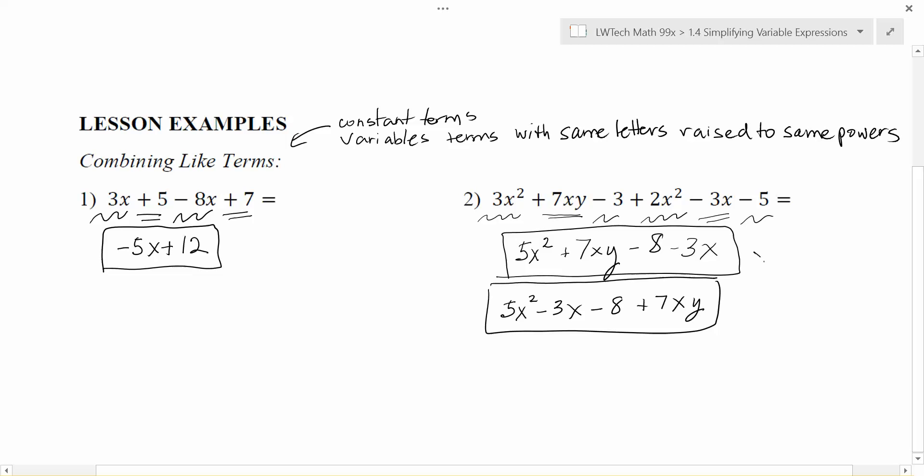But the signs in front of each of the answers does. So these are two equivalent answers. Either one would be fine. But notice the 8 does have to be subtracted, the 3x does have to be subtracted, the 7xy does have to be added, and the 5x squared is positive. So as long as you have all of those pieces, we can write things together in this particular way.